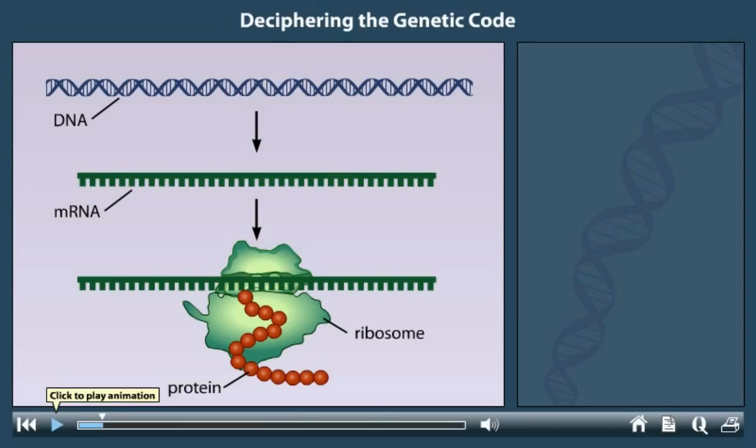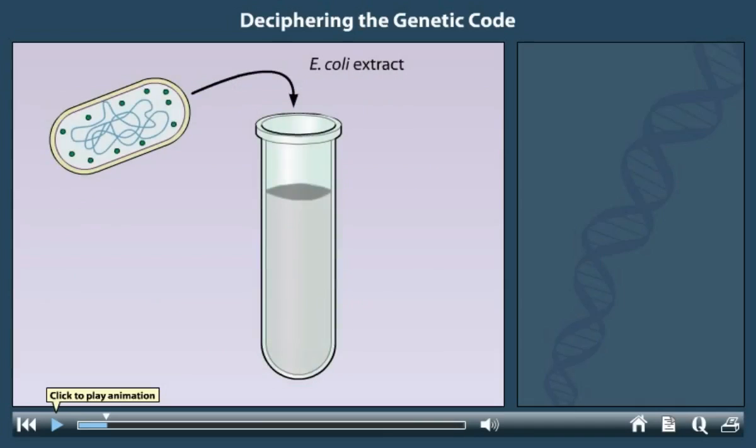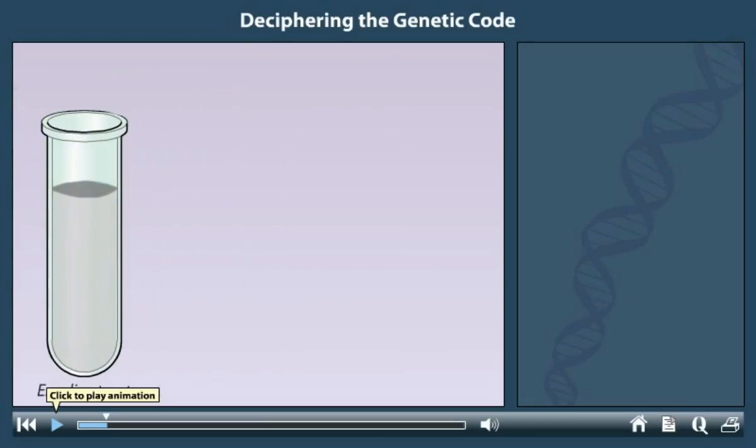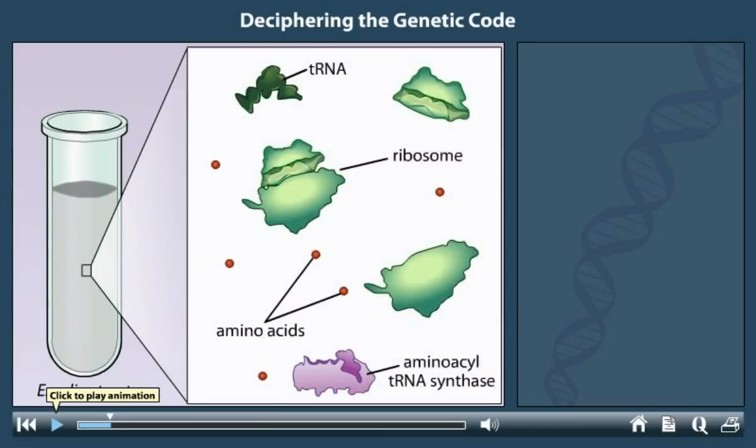The scientists began their experiments by preparing extracts from E. coli cells. The extracts were prepared so that they contained ribosomes, amino acids, and other components required for protein synthesis. However, the extracts lacked mRNA. Without RNA, no protein synthesis occurred.